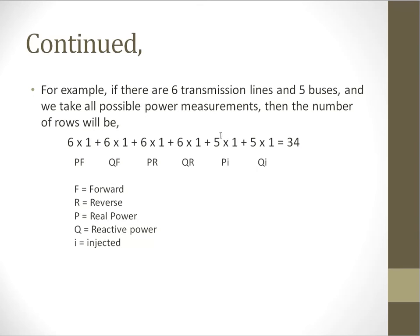So six transmission lines will have 24 measurements, and for the five buses we will have 10 more measurements. In total, the number of measurements will be 34. The number of rows for the Jacobian matrix will be 34.